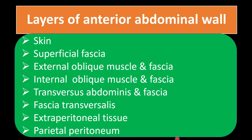First of all, we can see here the layers of the anterior abdominal wall. There are eight layers total present in the anterior abdomen. First is skin, then superficial fascia, then three important muscles: external oblique muscle and fascia, internal oblique muscle and fascia, transversus abdominis muscle and fascia. Then three other structures: fascia transversalis, extraperitoneal connective tissue, and parietal peritoneum.